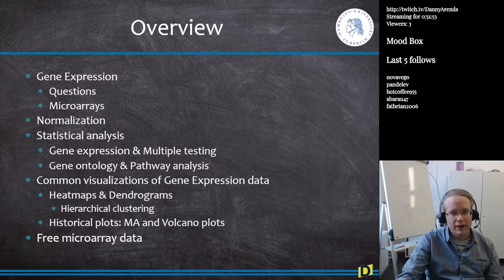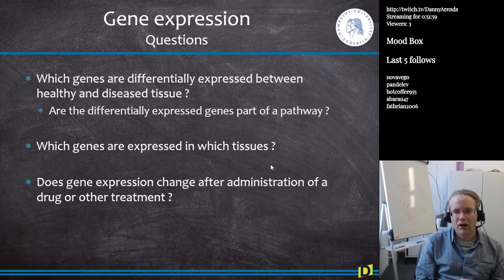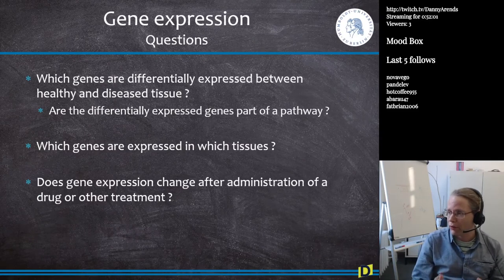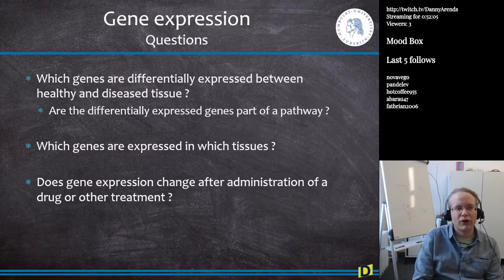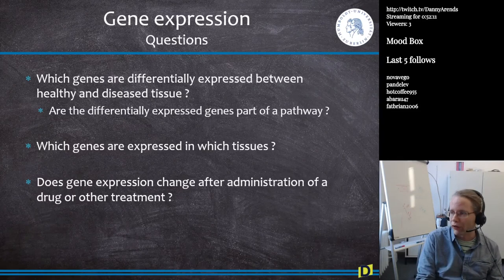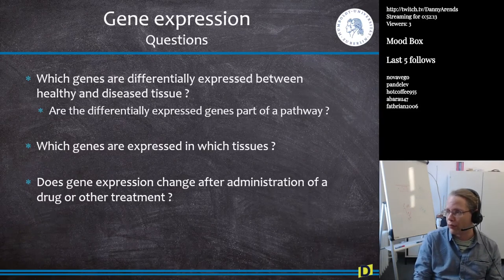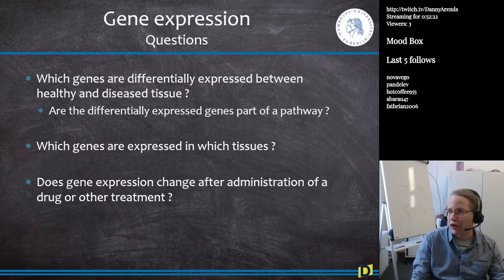This is the overview for today, so let's just jump in. There are many questions that people have when we talk about genes and gene expression. The general questions people want to answer are things like: which genes are differentially expressed between healthy and diseased tissue? For example, in cancer research, one of the main topics is figuring out which genes are upregulated in cancer so that they can be used as therapeutic targets.